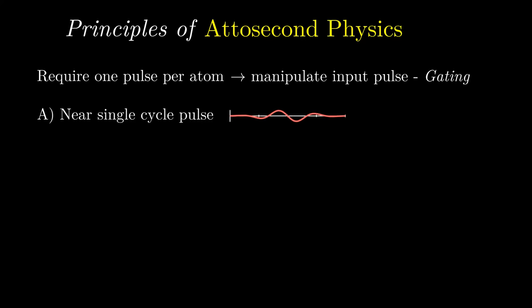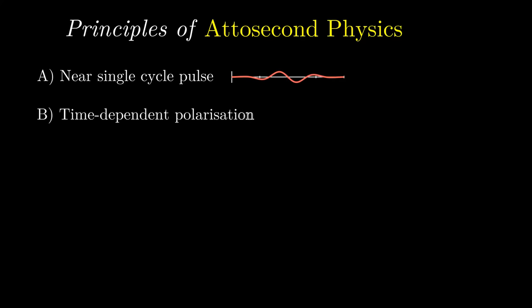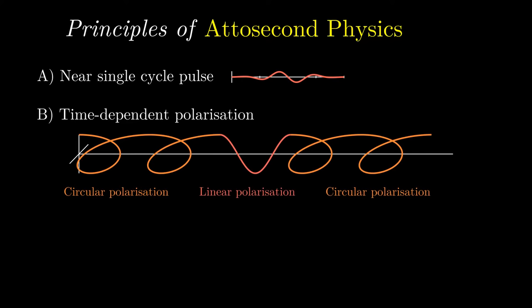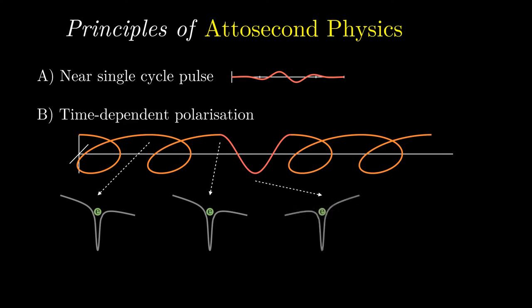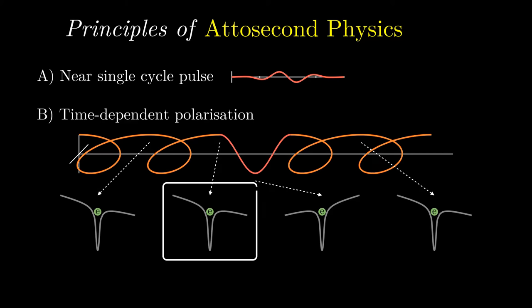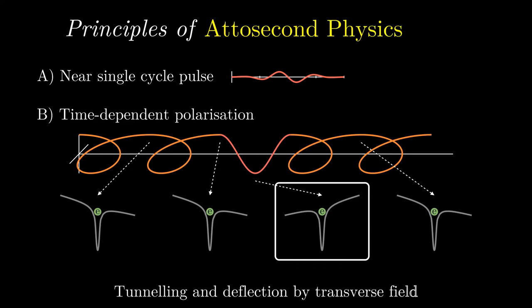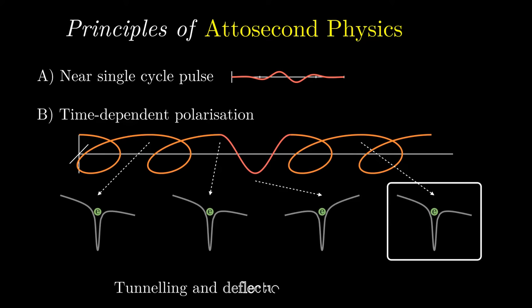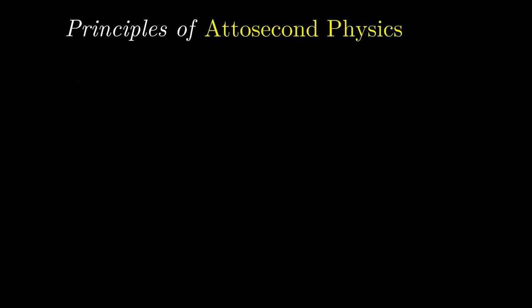Secondly, the incoming pulse could be generated with a time-dependent polarization, so that the tails are elliptically polarized, leaving only one cycle in the centre that is linearly polarized. This approach uses the fact that elliptically polarized light will accelerate the electron away from and thus miss the parent atom, so no attosecond pulse is generated by the tails. The linearly polarized centre, on the other hand, does lead to electron recollision, and so generates an attosecond pulse as explained earlier.